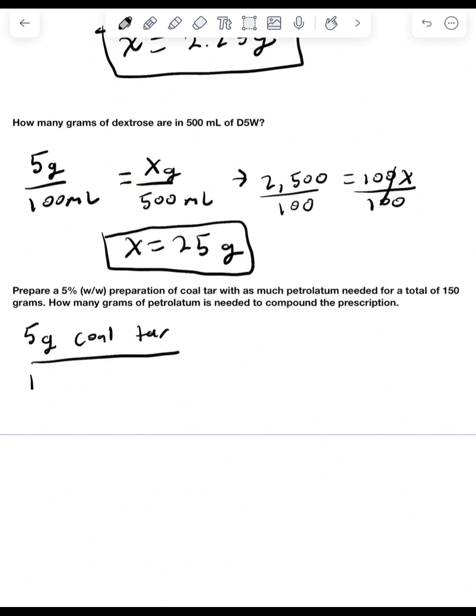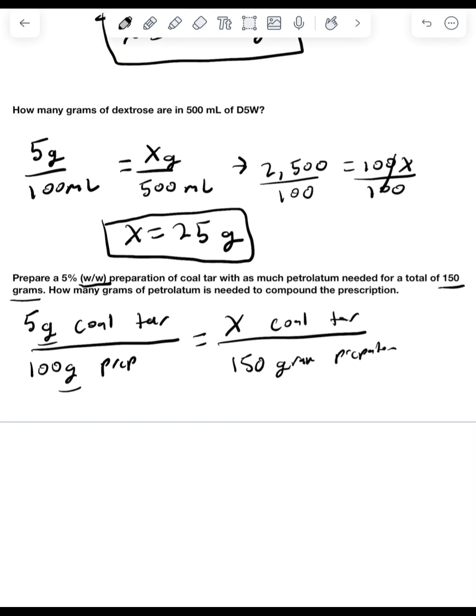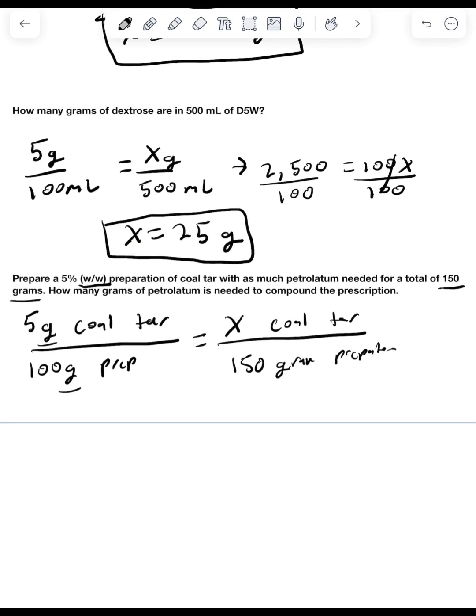We have 5 grams of coal tar all over 100 gram preparation. And we see from the weight to weight, it's going to be grams and grams, x equals x coal tar. And we know it's going to be 150 grams preparation because we could see here that's the total weight of the preparation. So now it's pretty simple. We just solve for x. We end up with x equal to 7.5 grams.